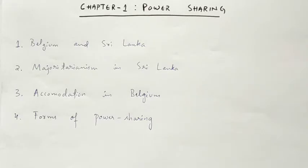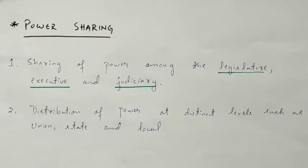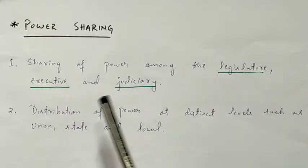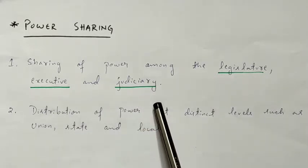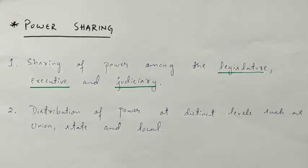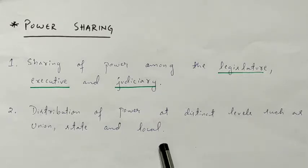Now, what is power sharing? How will you define it? Power sharing is the sharing of power among the three organs of the government — that is, legislature, executive, and judiciary. It is very important to design the democracy. Power sharing is also the distribution of power at distinct levels such as union, state, and local levels of government.